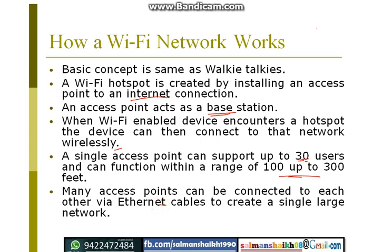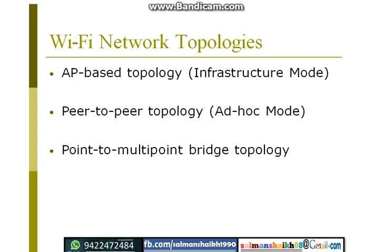How the Wi-Fi network works is very simple: there is one access point and a number of users. With the help of a WLAN card, they connect to that access point, and the access point gives an internet connection if it is connected to a satellite. One access point supports up to 30 users with a range of 100 to 300 square feet. You can also connect the access point via a wired LAN cable. The basic concept came from walkie-talkies, and next we will see Wi-Fi network topologies.